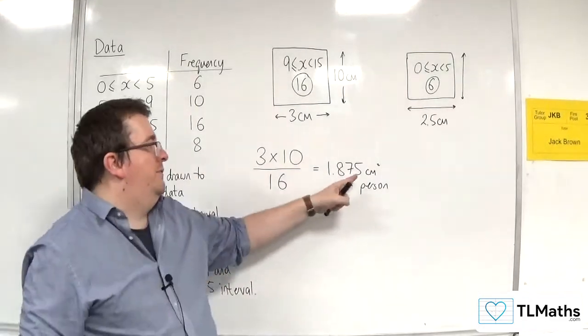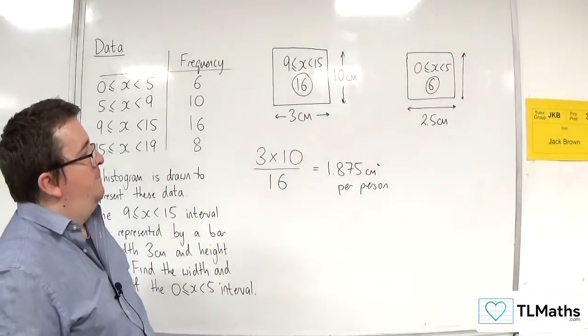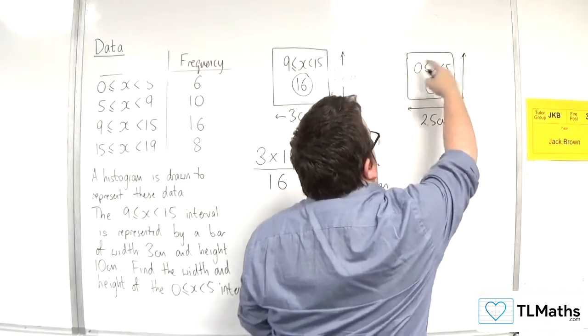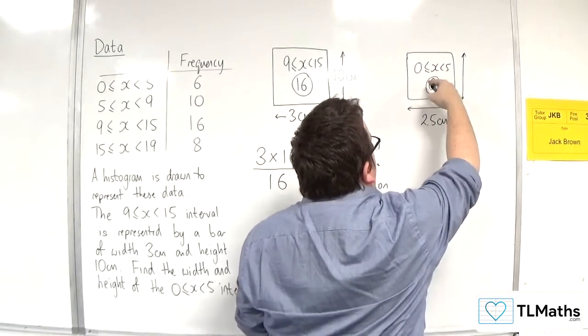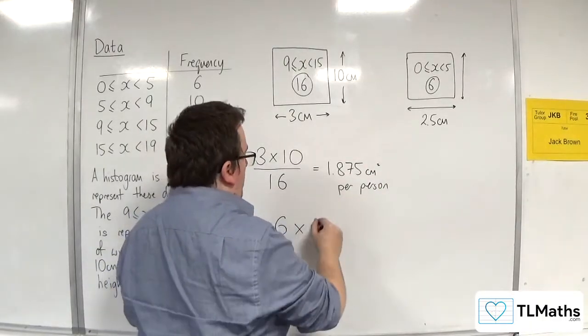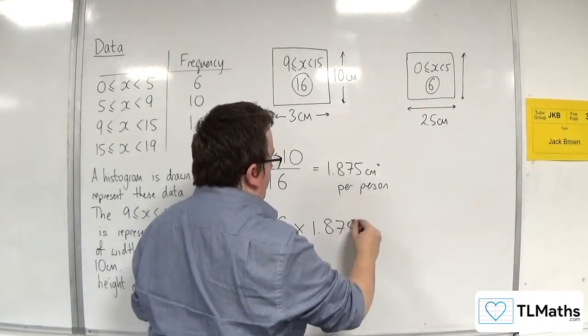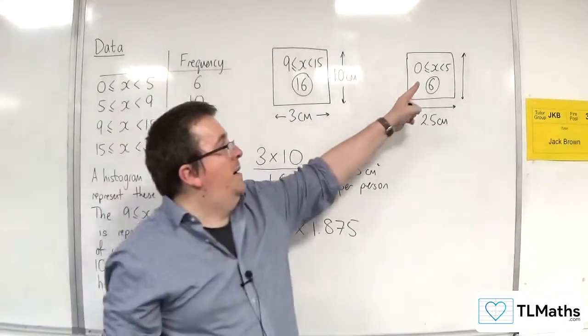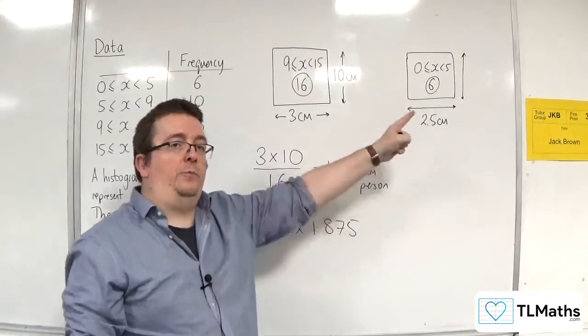So, we've got 1.875 centimeters squared per person. So, then I know that the area of my bar here has got to be 6 lots of 1.875. That's got to be the area of that block.